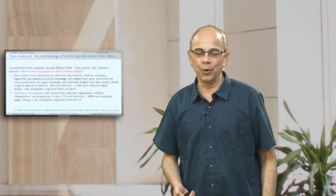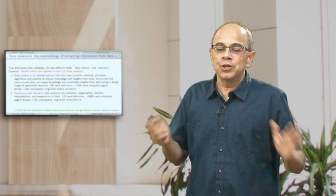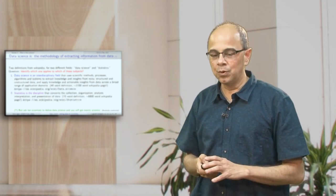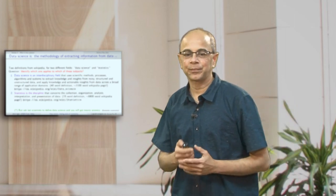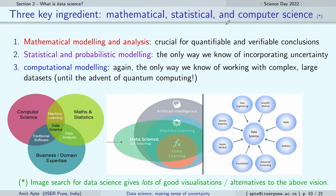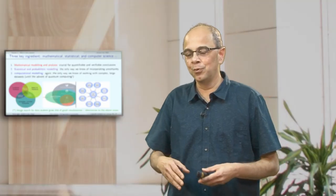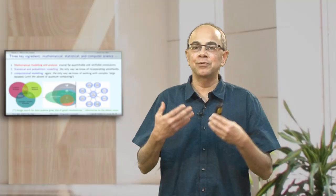In general, essentially it is to do with how to extract knowledge and information from data sets. There are three key ingredients: mathematics, statistics, and computer science. Mathematical modeling and analysis is extremely crucial for quantifying verifiable conclusions — that is where mathematics comes in. In particular, the mathematics of uncertainty is what is called probability theory.